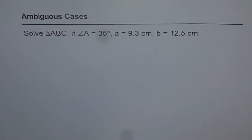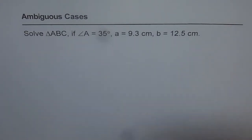Ambiguous Cases. Solve triangle ABC if angle A equals 35 degrees, side A equals 9.3 centimeters, and side B is 12.5 centimeters.